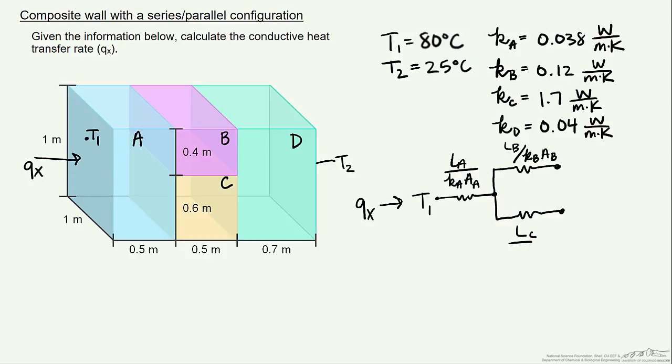And these resistances are conductive. And keep in mind when we talk about area, we're talking about that cross-sectional area that our flux goes through.